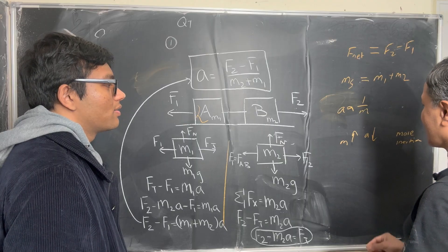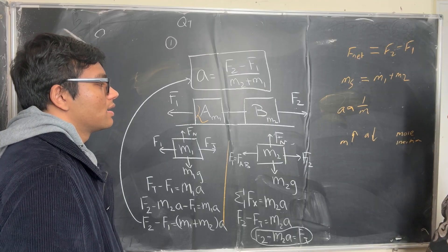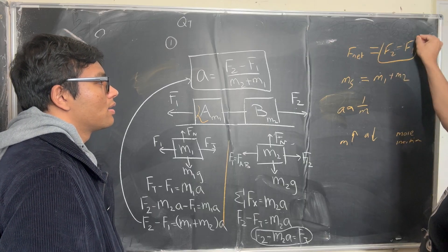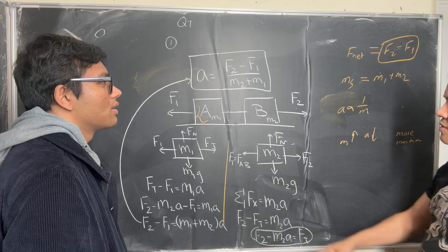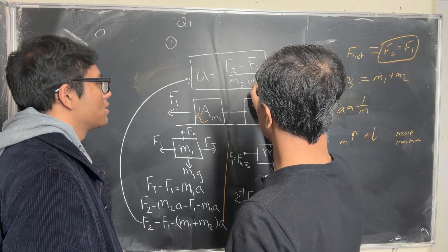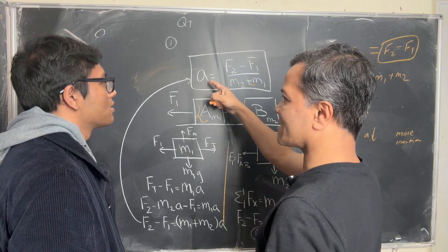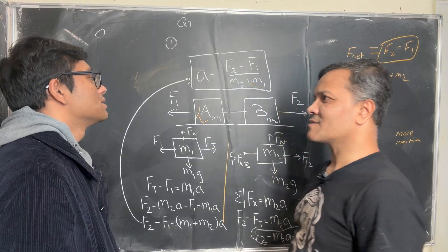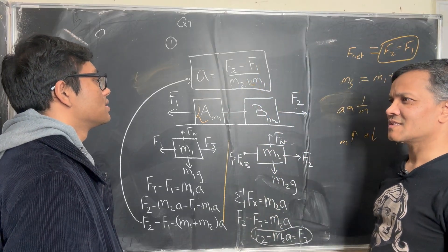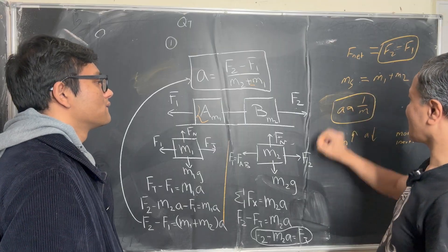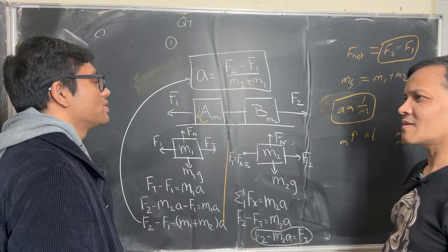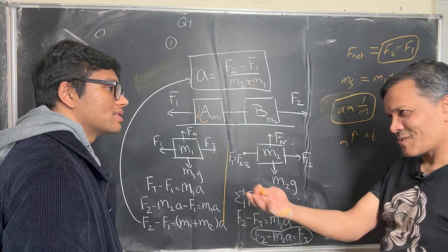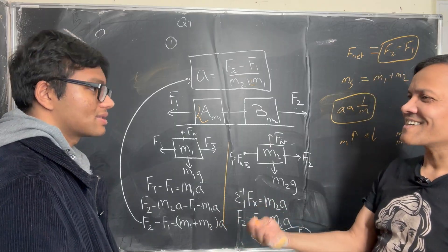Inertia needs one more thing to guarantee it — the net force has to remain constant. When you add mass to M1 here, you add nothing to the external force, so the external force remains constant. That's why Newton's second law holds. When you increase the moon's mass, the gravitational force also increases, so acceleration stays the same. Only inertia increasing alone doesn't guarantee a change in acceleration.